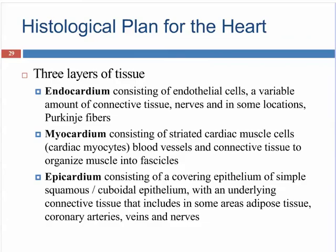As in the blood vessels, the heart is composed of three tissue layers. One is to provide a suitable lining — the inner layer, the endocardium. The next is to provide the mechanical contraction of the heart to pump blood — the middle layer, the myocardium. The outer layer, the epicardium, provides a smooth surface with pericardial sac fluid to minimize friction as the heart beats, and provides a connective tissue or adipose tissue-rich area for the passage of the major coronary arteries, veins, and nerves.